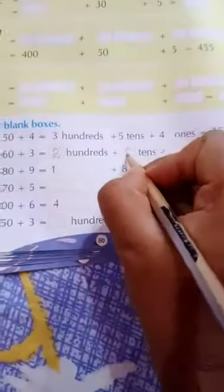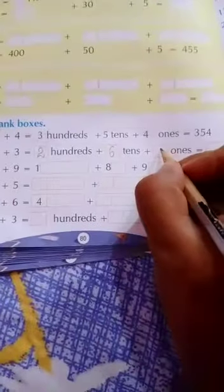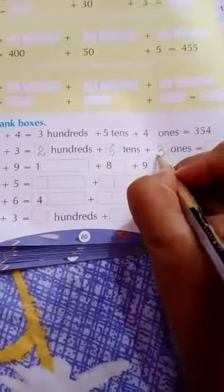200, here is a piece of boxes. 2 and 60, 6 tens and 3 ones. Okay. So, 263.